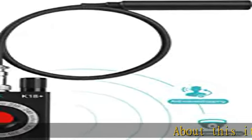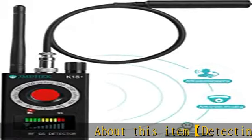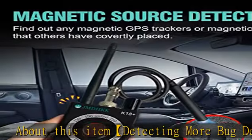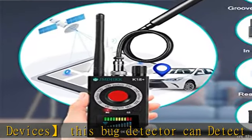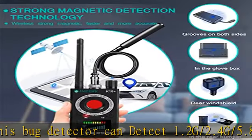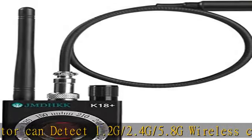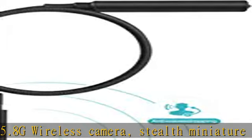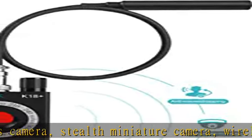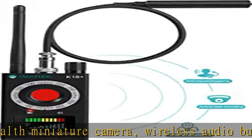This bug detector can detect 1.2G/2.4G/5.8G wireless cameras, stealth miniature cameras, wireless audio bugs, body wires, wiretapping, phone taps, GSM/CDMA/DECT cellular audio video bugging devices, unwanted GPS trackers, and more bug devices and transmitters.